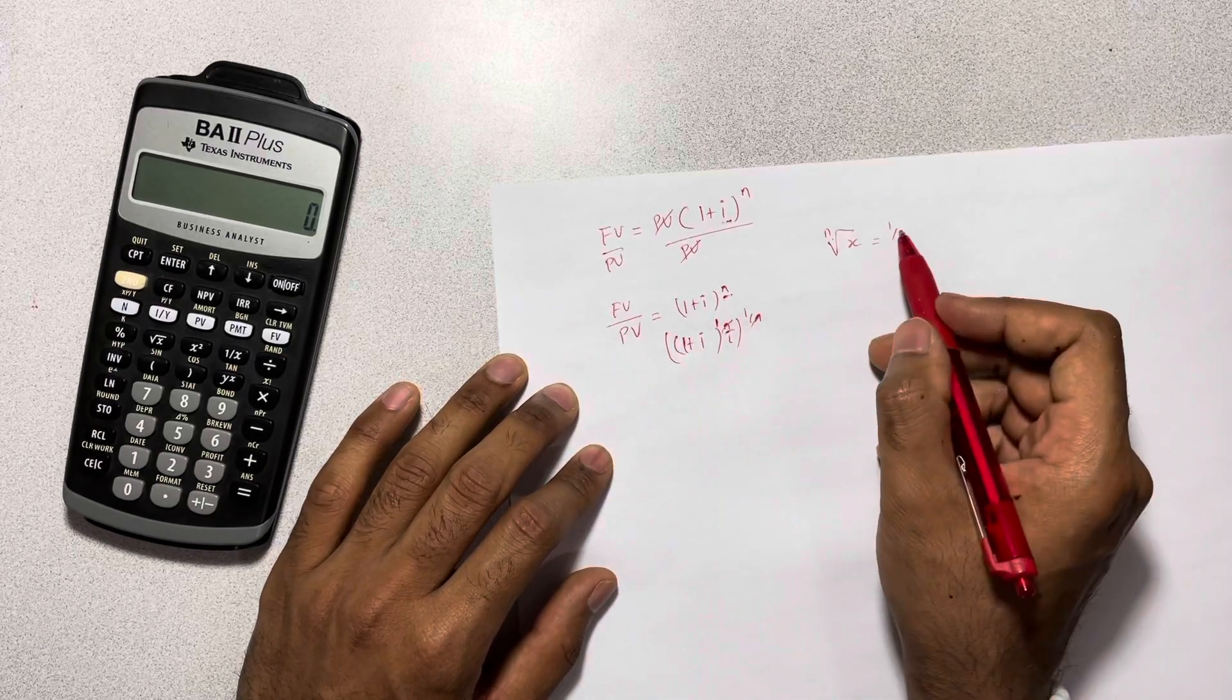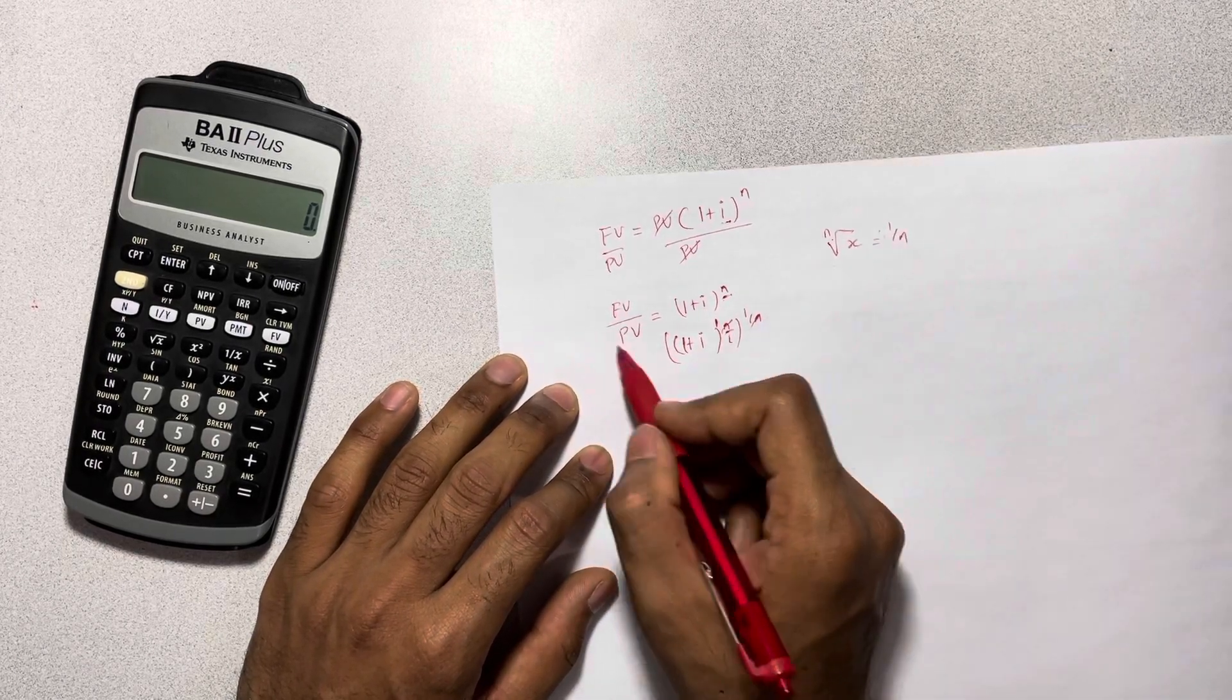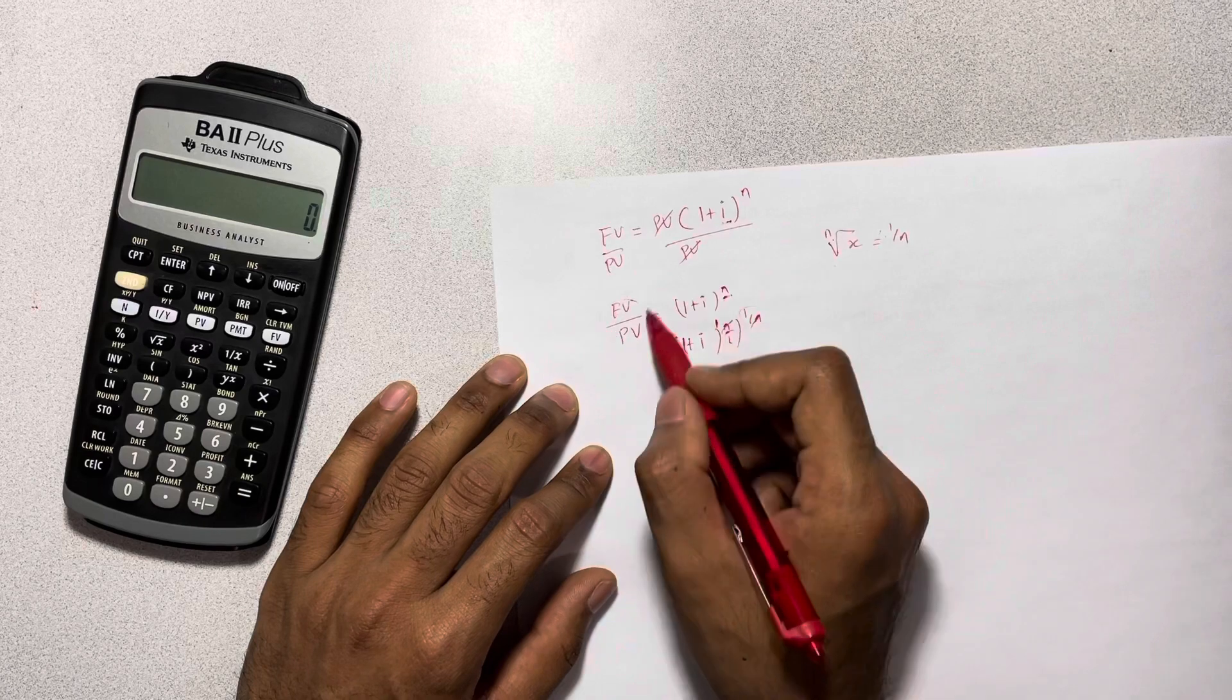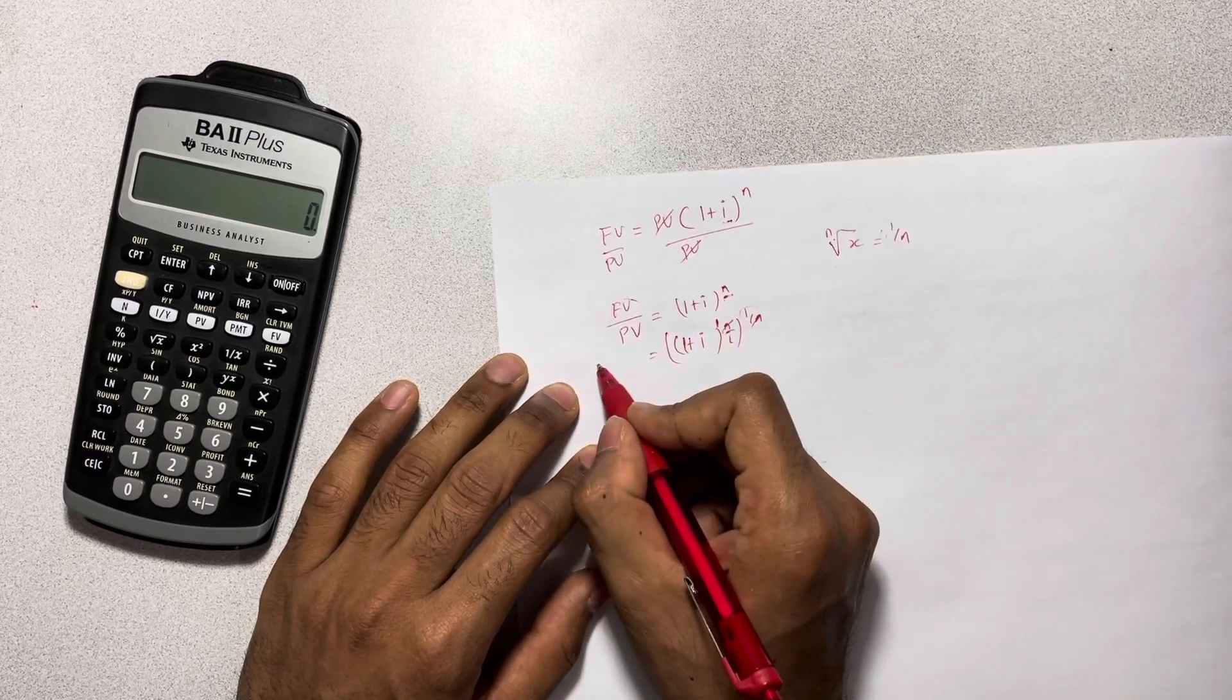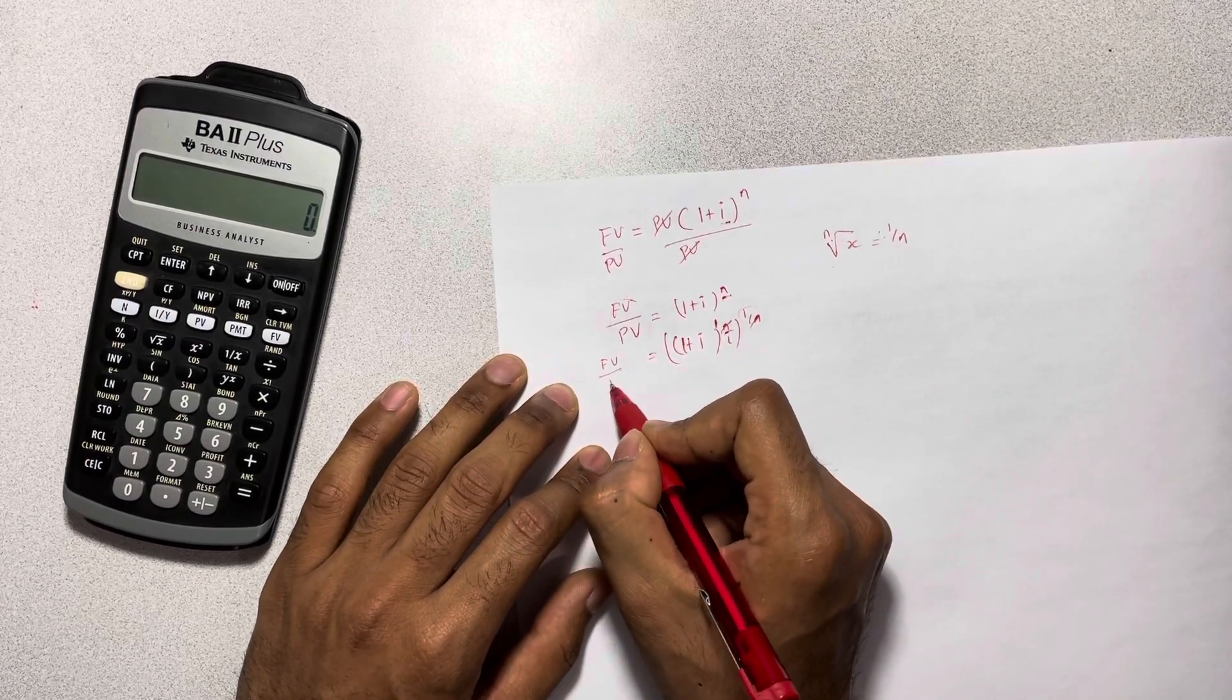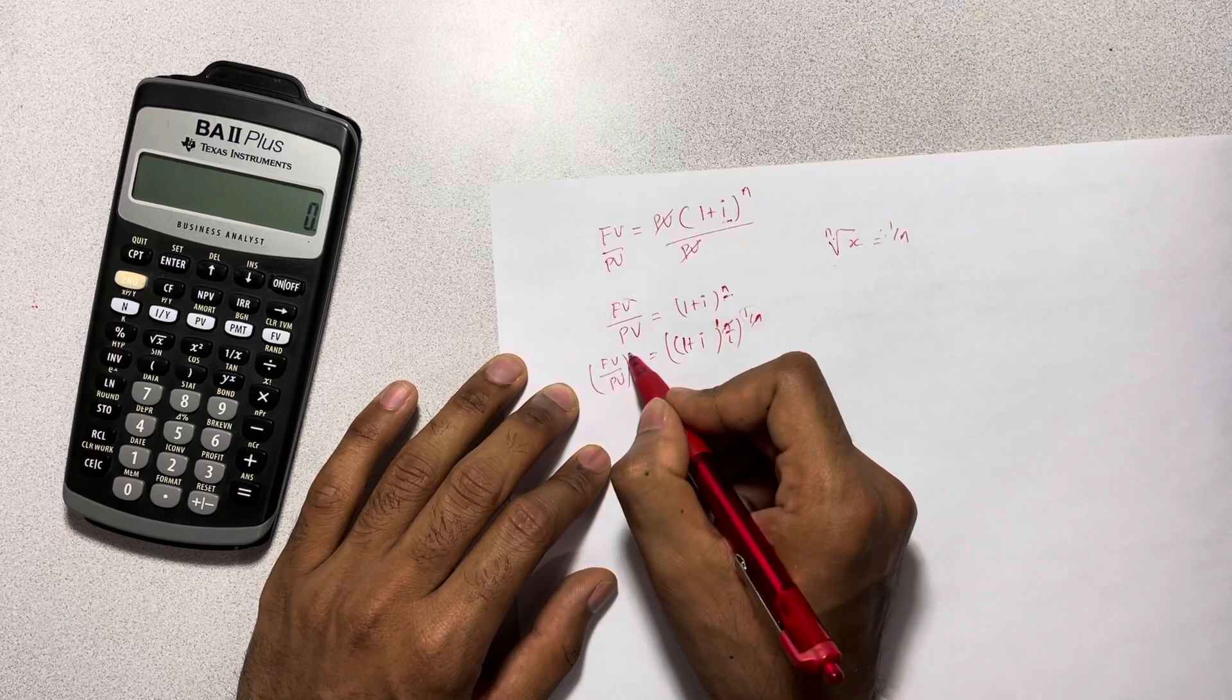And then, since we do the nth root on one side, we have to do it on the other side. So therefore, we will have future value divided by present value to the power of 1 over n.